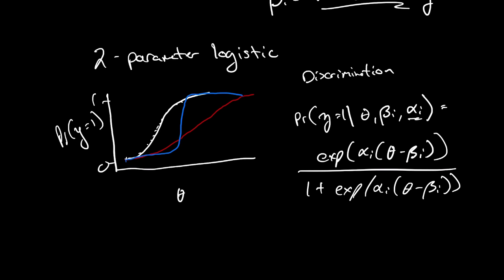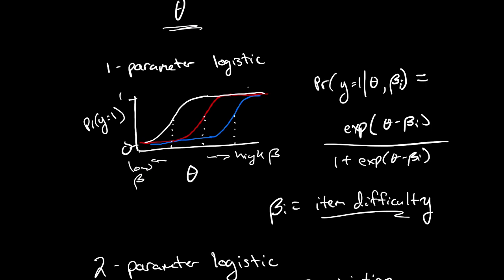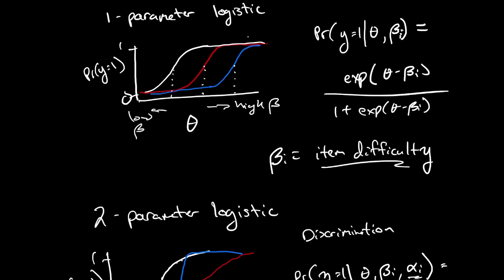That is the basic idea behind two different types of item response theory models. One is the two parameter logistic model, which makes it so that the functional form relating the underlying trait value to the probability of response depends not only on the difficulty of an item, but also how discriminatory it is, or how fast does that item characteristic curve change in probability across theta. Whereas the one parameter model only differentiates it based on location on theta. Those are the two big features that these two types of item response theory models help to capture differences along our trait that we're interested in measuring.